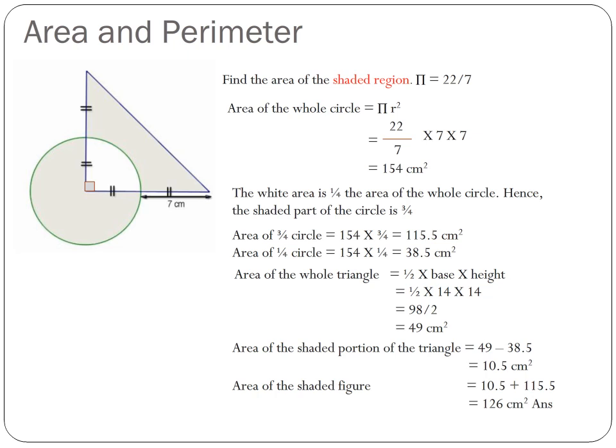Area of three quarter circle is equal to 154, that is the whole circle, 154 multiplied by three quarters. This is equal to 115.5 square centimeters. The area of one quarter circle is equal to 154 times one quarter, and this is equal to 38.5 square centimeters.